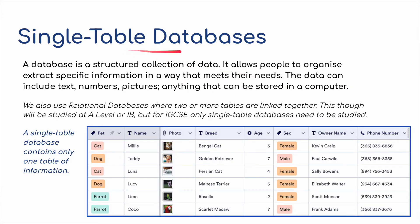So what is a single table database? Well, a database is a structured collection of data. It allows people to organize and extract specific information in a way that meets their needs. The data can include text, numbers, pictures — anything that can be stored in a computer.